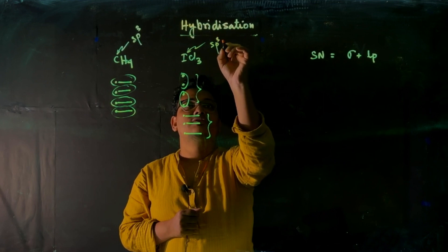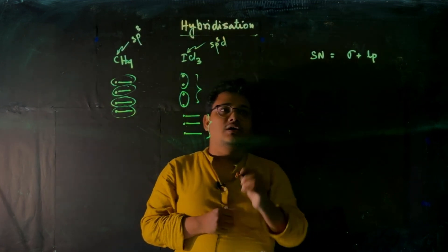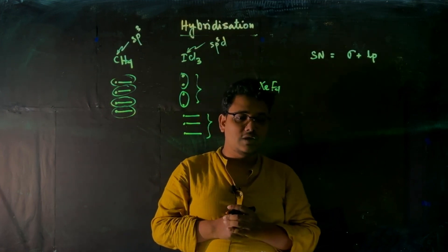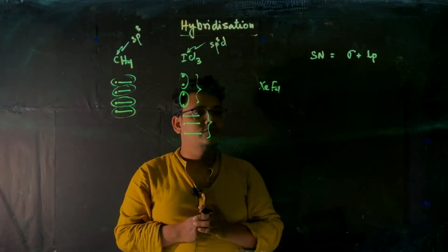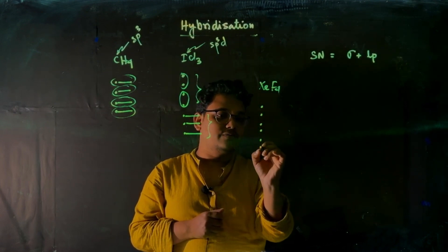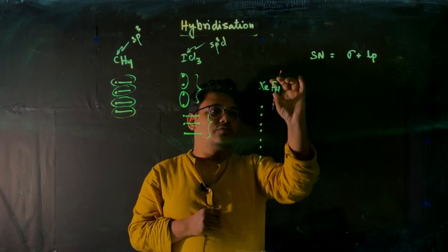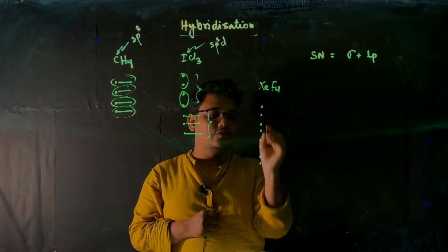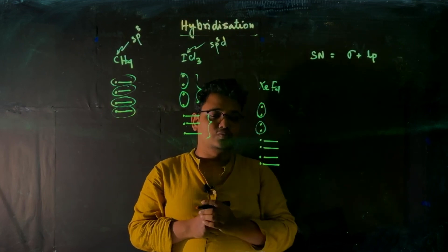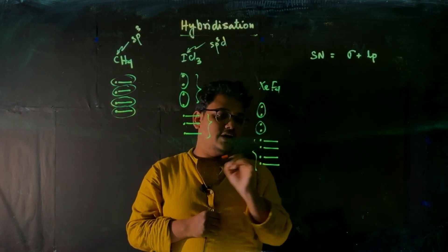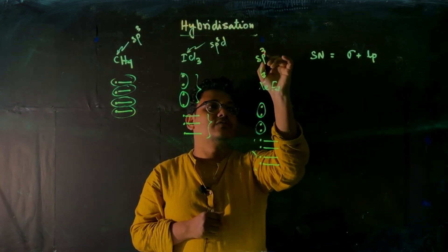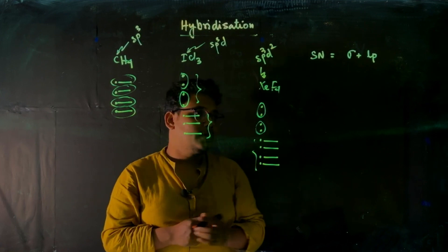Now consider XeF₄. Xenon has eight valence electrons. Four fluorine atoms will each form one sigma bond, giving four sigma bonds. The remaining electrons form two lone pairs. So the steric number is four sigma bonds plus two lone pairs, which equals six, and the hybridization here will be sp³d².